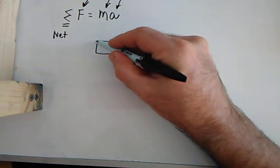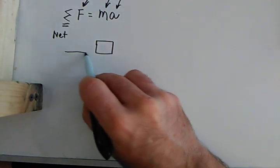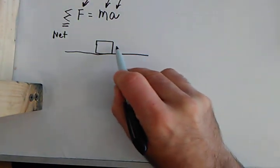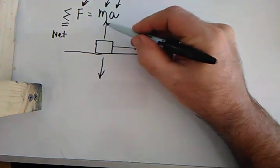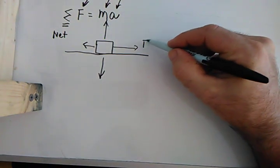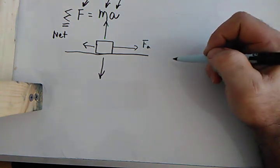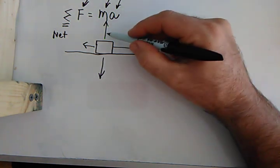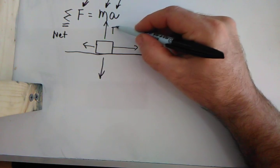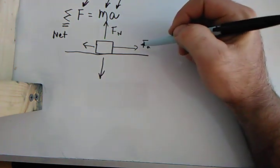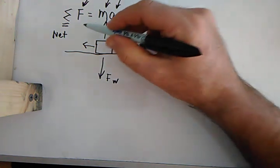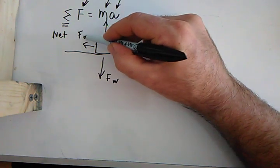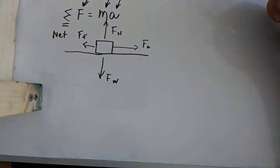We're going to give you an example of a typical block resting on a surface. I'm going to label all the forces. You've got the applied force to the right, you've got what's called a normal force up, you've got the force of weight down, and then you've got the force of friction pulling backwards on the block.